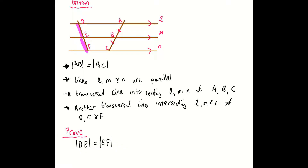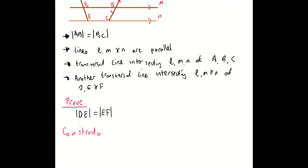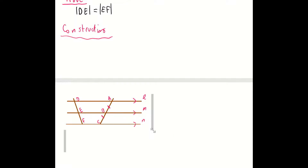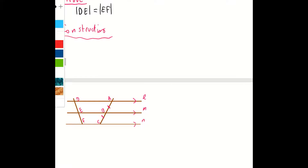The next thing I'm going to do is move on to my constructions. What we're going to do is first of all draw a line that is parallel to DF and goes through the point A. It's intersecting L at A, which is already marked on the diagram. It's intersecting M at a new point — I'm going to call that E dash, because it's the image of the original E — and I'm going to call the point where it crosses line N, F dash, because it's the image of the F that was originally marked.